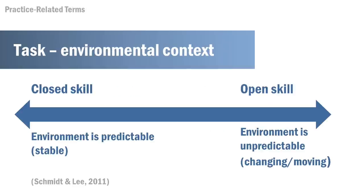There's also the environmental context. In a closed situation, it's very predictable and stable. But with an open situation, you cannot effectively plan your entire movement in advance because you may be adapting to a changing environment such as walking through a crowded cafeteria. This is a continuum with a semi-predictable environment somewhere in between.